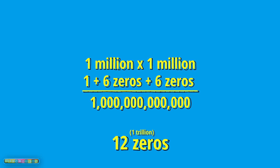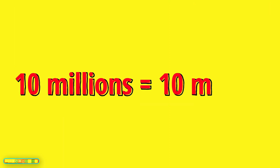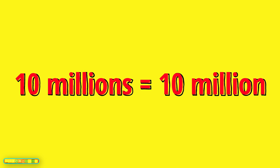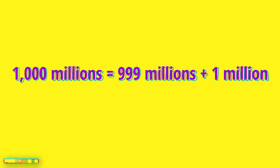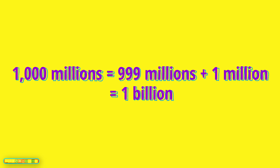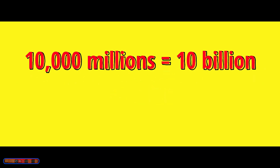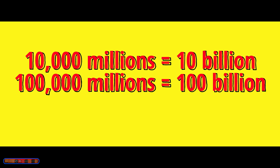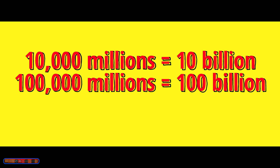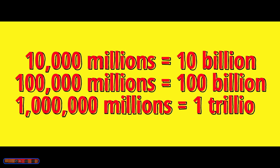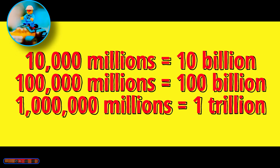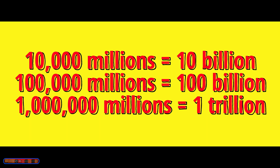To better grasp what's going on, think about it this way: 10 millions is just 10 million. 1,000 millions is just 999 millions plus another million — we call that 1 billion. So 10,000 millions is 10 billion, and 100,000 millions is 100 billion. That's why 1 million millions is 1 trillion.